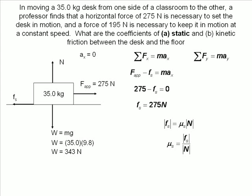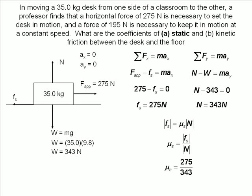Next, we will find the normal force. Our weight is negative, so we subtract it from our normal force. We know the acceleration in the y direction is zero because the system is not moving vertically. We input our values and find the magnitude of the normal force. Now we can take both the values we found and plug them in to solve for mu s. Finally, we can find the coefficient of static friction, and we have our final answer.